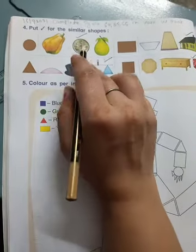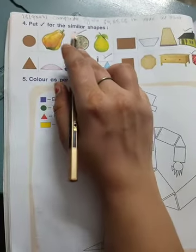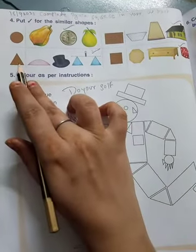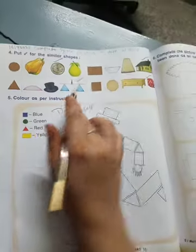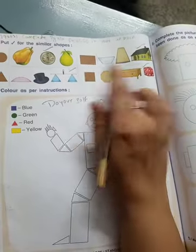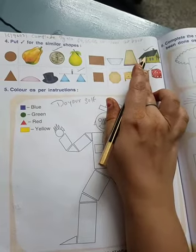Here we have a circle. We have a coin circle. We will right click here. Here we have a triangle. We will tick here. Here we have a rectangle.